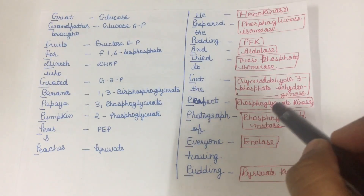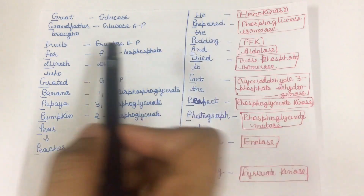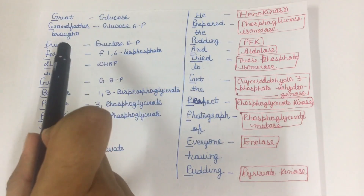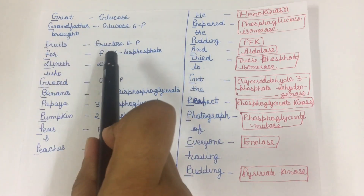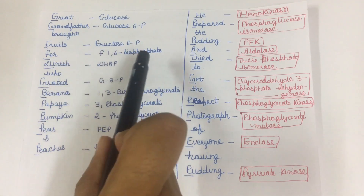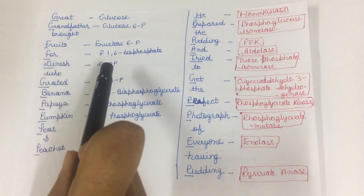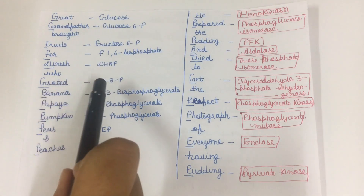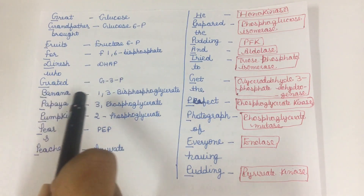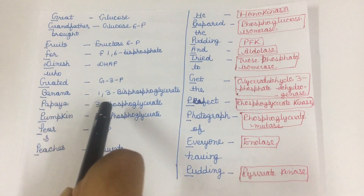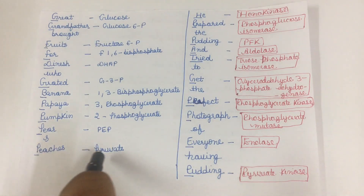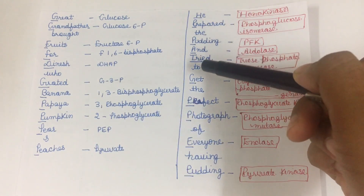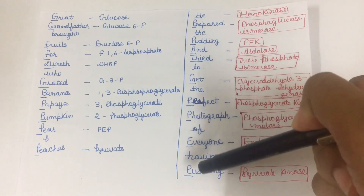Great — G — refers to glucose; grandfather — G — refers to glucose-6-phosphate; fruits — F — refers to fructose-6-phosphate; for — F — refers to fructose-1,6-bisphosphate; D of Dinesh refers to dihydroxyacetone phosphate; grated refers to glyceraldehyde-3-phosphate; B refers to 1,3-bisphosphoglycerate; papaya — P — refers to 3-phosphoglycerate; pumpkin — P — refers to 2-phosphoglycerate; and the last P refers to phosphoenol pyruvate. You can memorize it very easily.